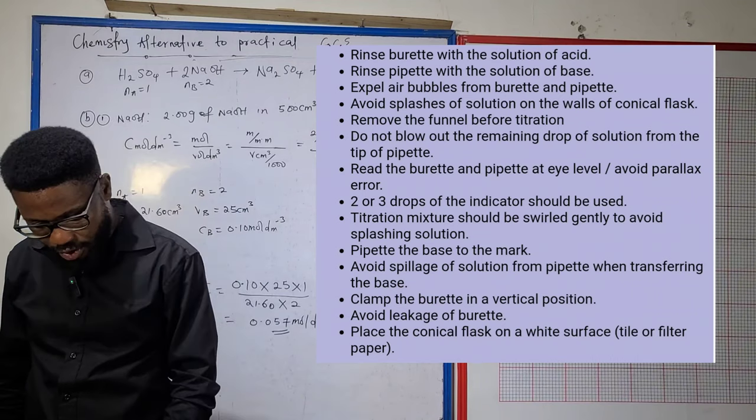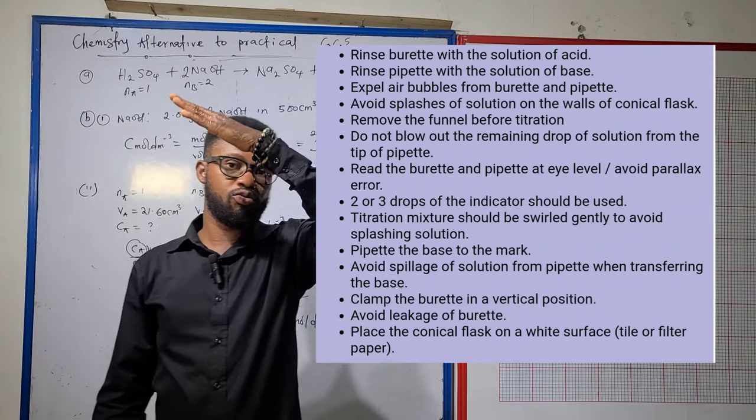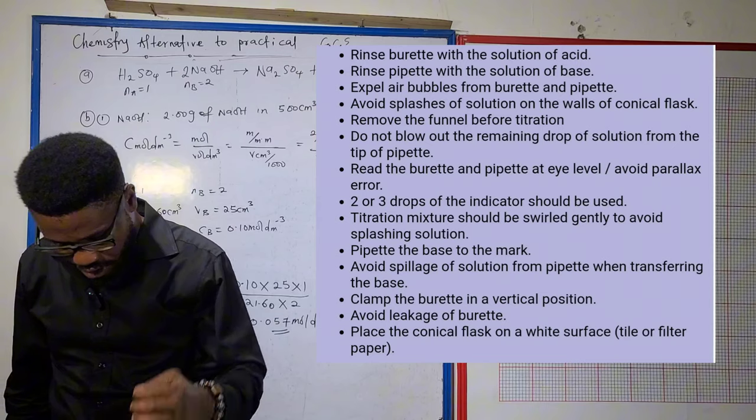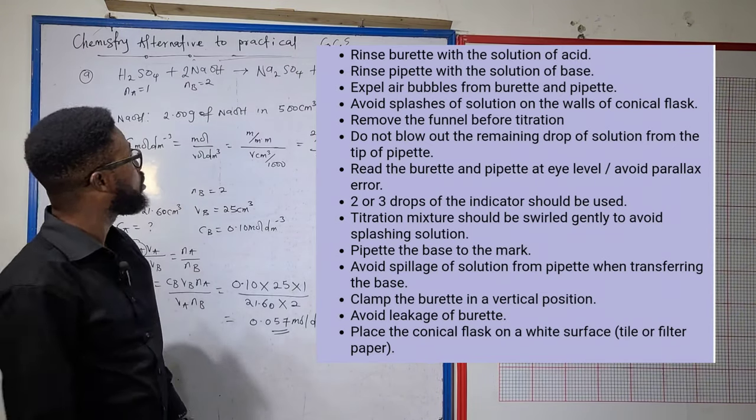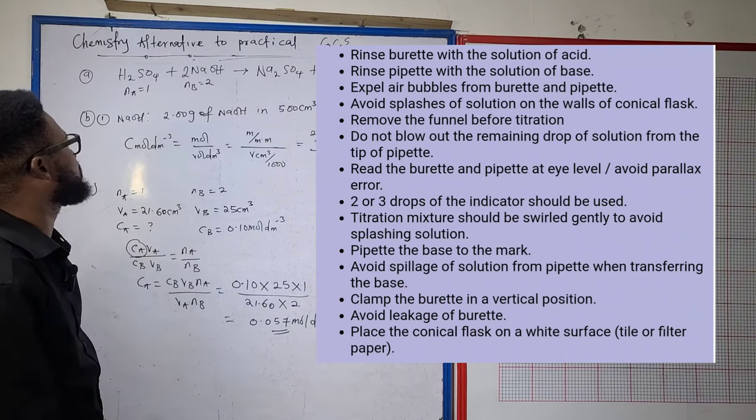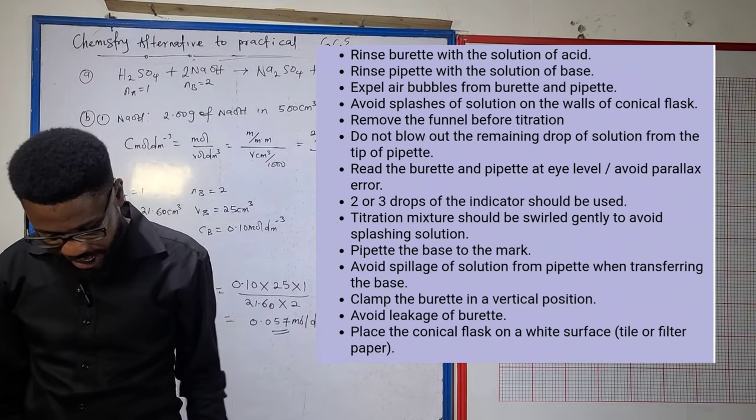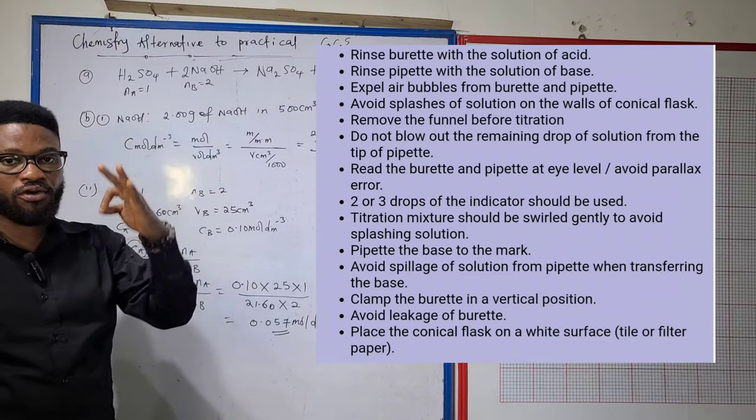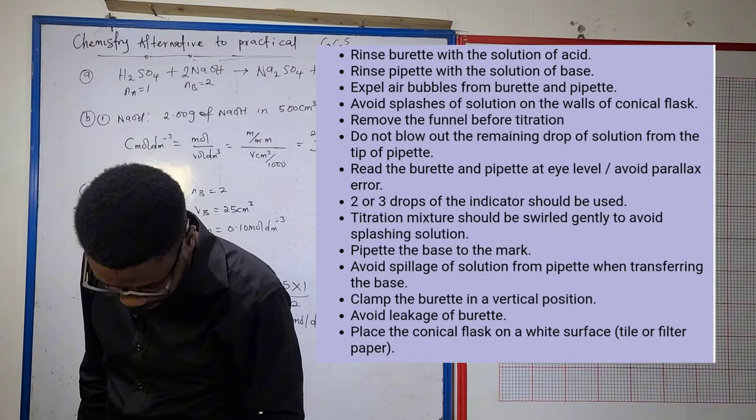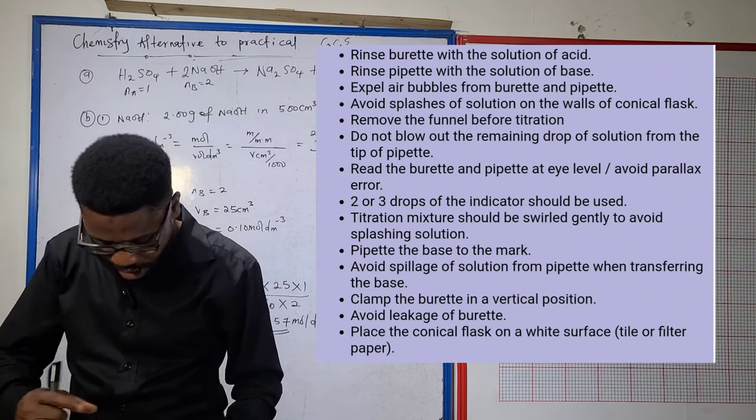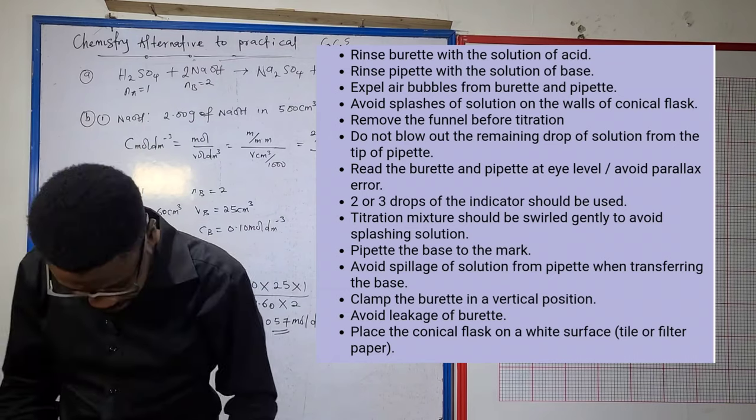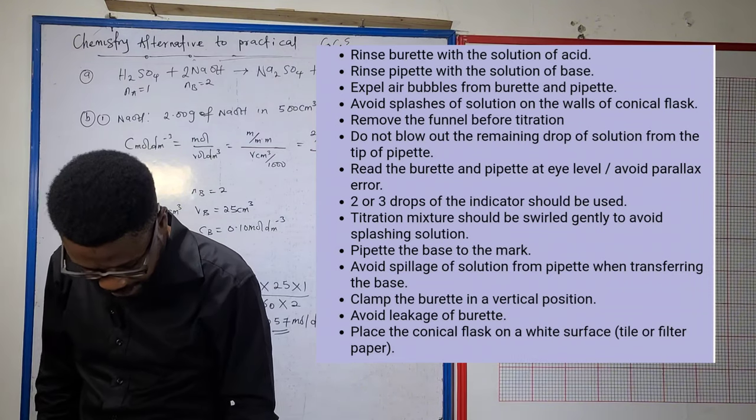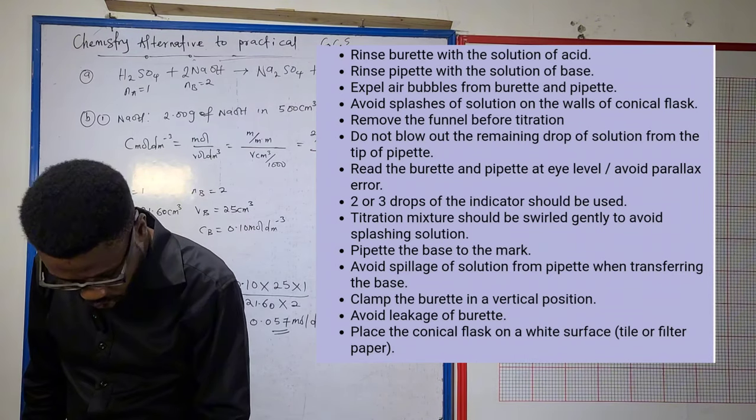Read your burette and pipette at eye level to avoid parallax errors. Obey the right meniscus rule, which is the lower meniscus. Use two or three drops of indicator—looking at this strong acid versus strong base, you can use methyl orange, phenolphthalein, or just about any indicator. The titration mixture should be swirled gently in the conical flask so they mix thoroughly without splashing.